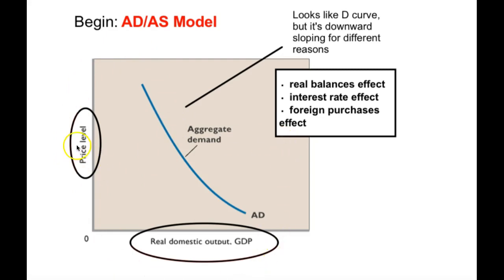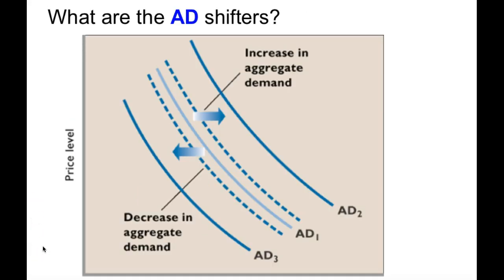This, then, is the aggregate demand curve. We're plotting price level against output — what all of the purchasers in an economy do as the price level rises or falls. The aggregate demand curve can shift, meaning that without a change in price level, consumers, government purchasers, firms, and people buying our exports might decide to buy more or less, not related to any specific change in price level.